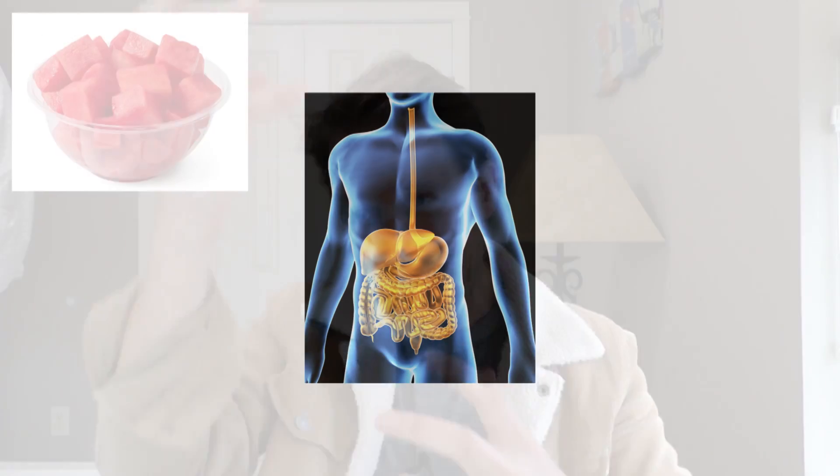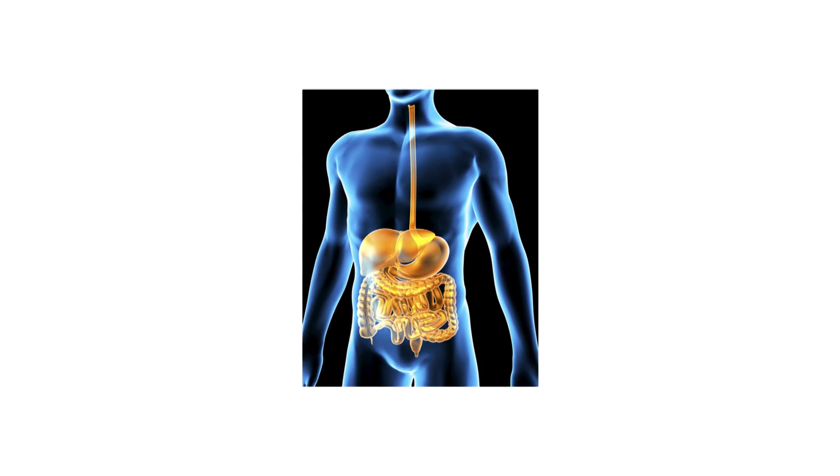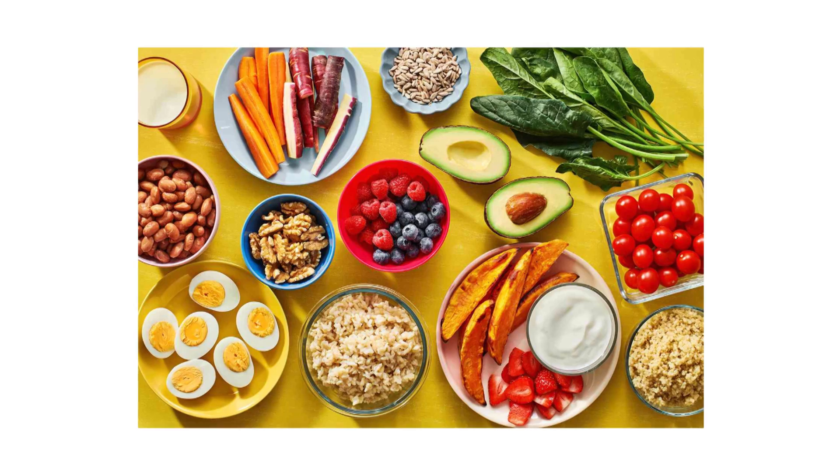Here's the important bit: knowledge of the process does not in any way dictate input. You could know everything about that process and have no clue what needs to go in, because one does not dictate the other. The process can constrain the input — for example, our stomach is only so big, so we can't fit an entire watermelon in there. Those constraints might change the input; in this case, let's just chop up the watermelon and get it in piece by piece.